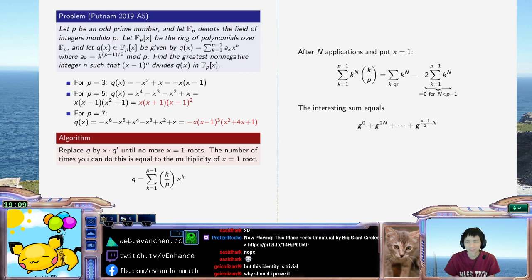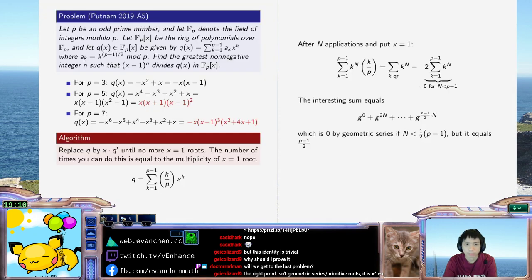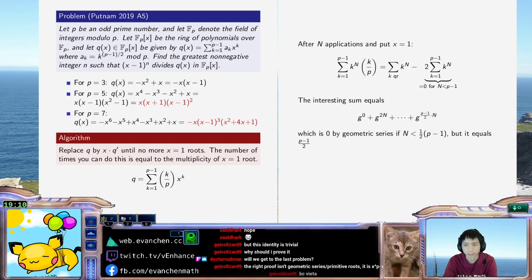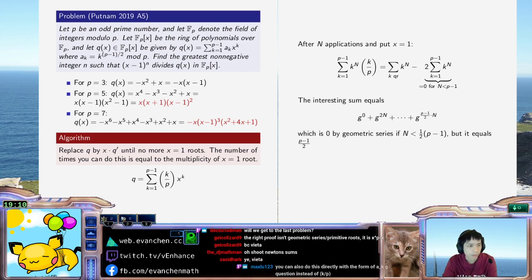Yeah, but anyways, there. Which is zero. Anyways, this is zero by geometric series if it's strictly less than half p minus 1. But it's non-zero. It's actually equal to... yeah, we should get to the last problem. We went through this one quite quickly. Yeah. If n equals half p minus 1, all set.